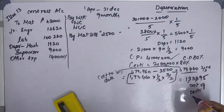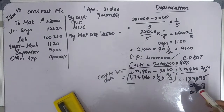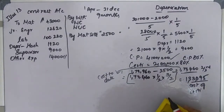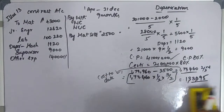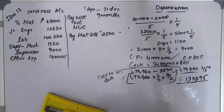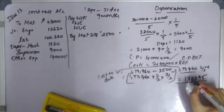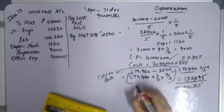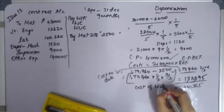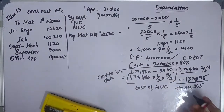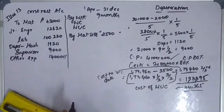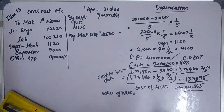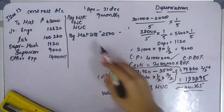From the cost to date and the cost of certified work, we can now find the cost of work uncertified. Cost of work uncertified = cost to date minus cost of certified work.